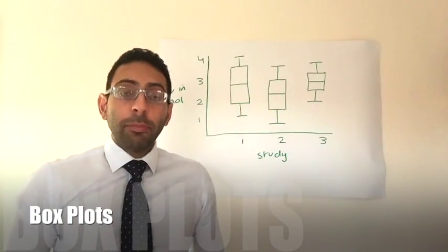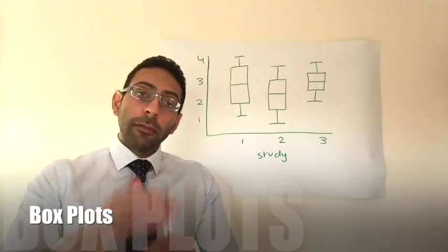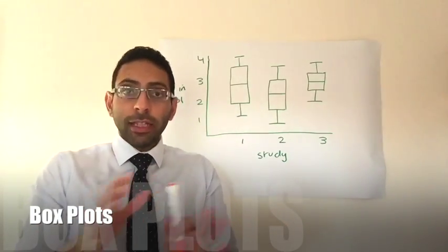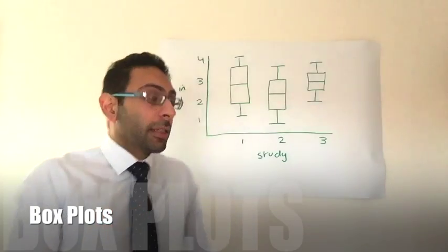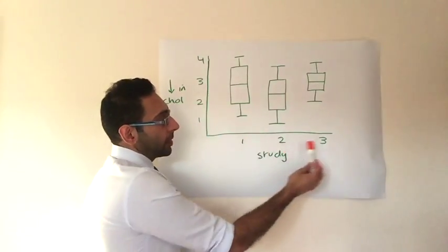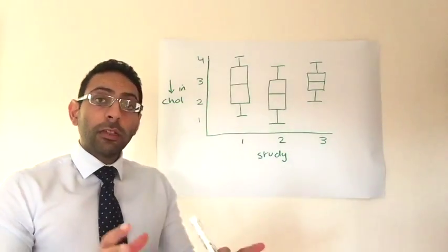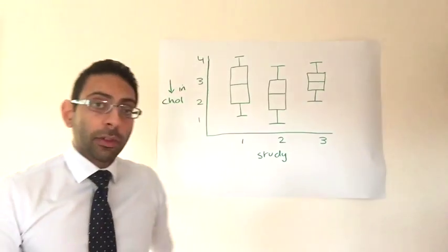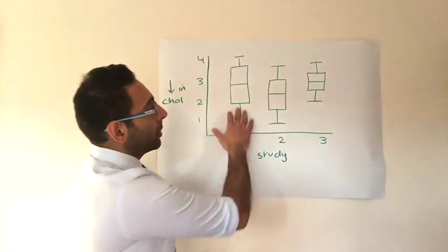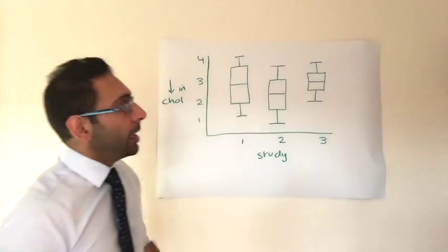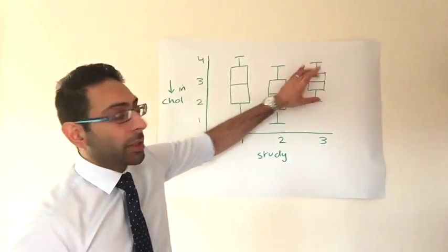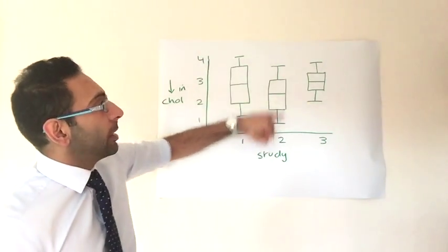So the next thing we look at are box plots. Now box plots are a really simple way of looking at the variation of various sets of data, for example in three separate studies. So if you look here, we've got three individual studies, and they've all been looking at the effect of a drug on reducing the amount of cholesterol. Now, if you've got the results skewed across here, you can see that they're all as three separate boxes with what we call whiskers either side. Now what do these represent?